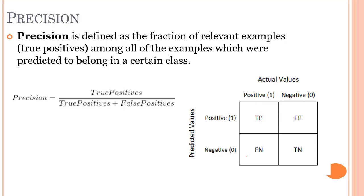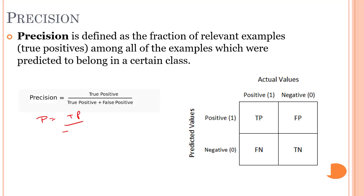The next metric is precision. Precision is the ability of a classification model to identify only the relevant data points. Precision is defined as the number of true positives divided by true positives plus false positives — that is, P equals TP divided by TP plus FP. Precision is the fraction of relevant examples among all examples predicted to belong to a certain class.